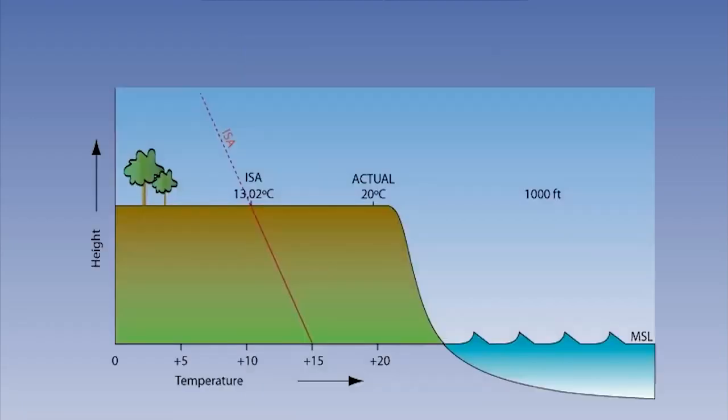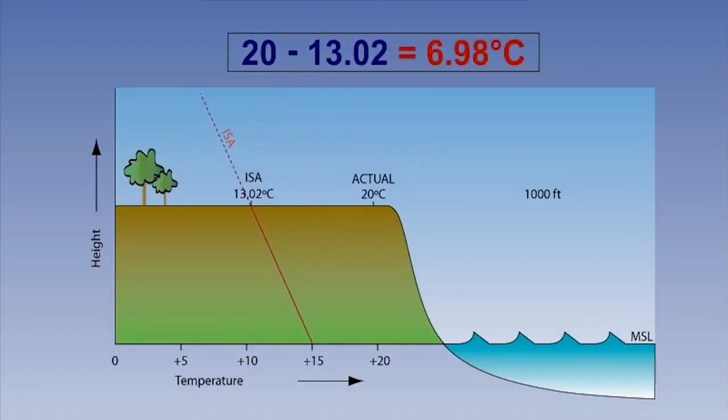In the diagram, we can see that at an airfield 1,000 feet above sea level, the ISA temperature should be 13.02 degrees Celsius, but the actual temperature is 20 degrees Celsius, which is much hotter than the standard. We need to calculate how much hotter than ISA the real atmosphere is. A simple mathematical calculation shows that the atmosphere is 6.98 degrees Celsius hotter than ISA.